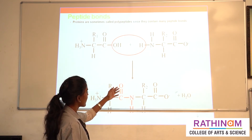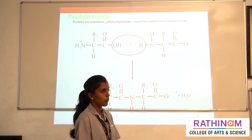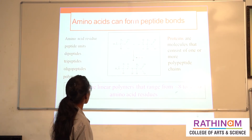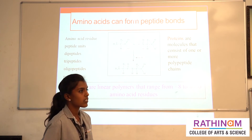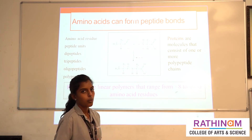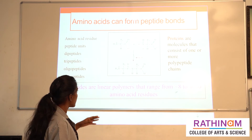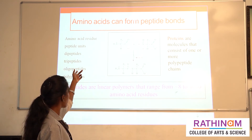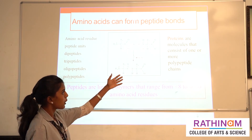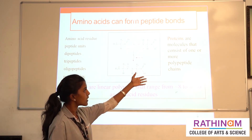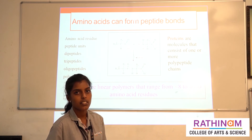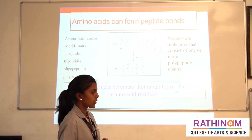One water molecule is also eliminated in this process. Based on the number of amino acids or peptide bonds, we can classify them as dipeptides, tripeptides, oligopeptides, and polypeptides. Proteins consist of one or more polypeptide chains, and a polypeptide chain means two or more amino acids linked together.